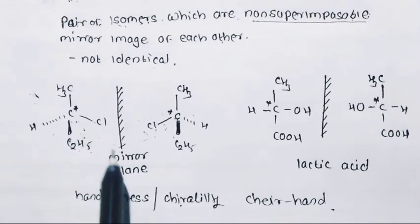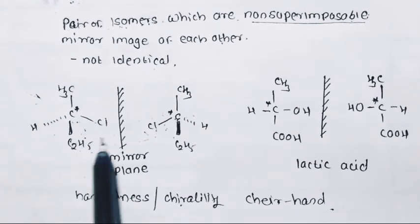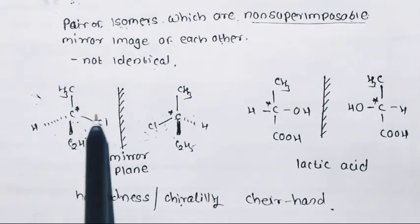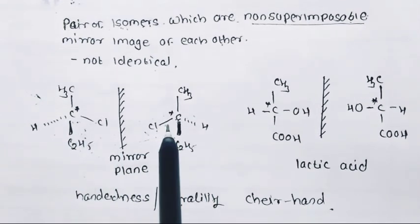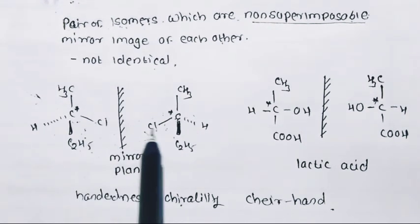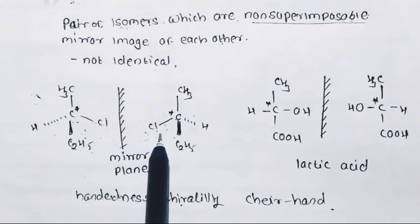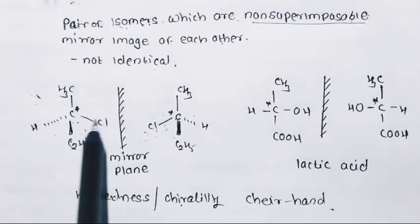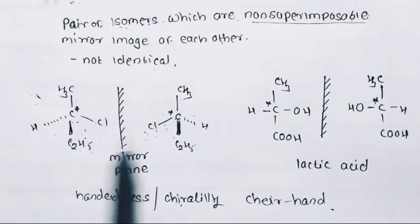This stereoisomerism in which two pairs of isomers have different spatial arrangement of groups around a chiral carbon is called optical isomerism. These optical isomers differ from each other in terms of optical activity. Both structures have the same molecular formula and same structural formula, but the orientation of the four groups is different, and this difference is measurable by optical activity.